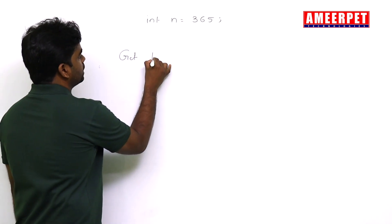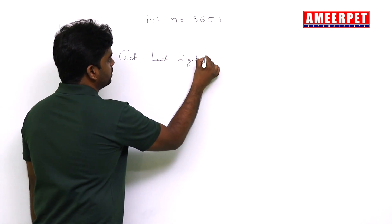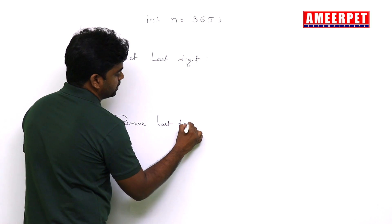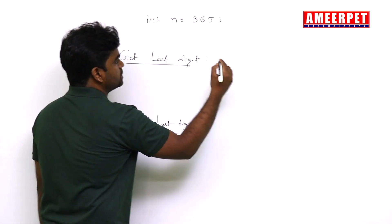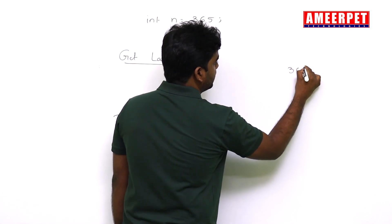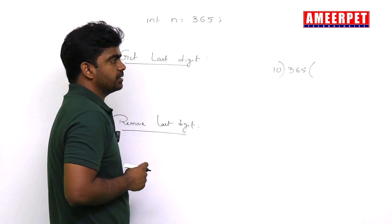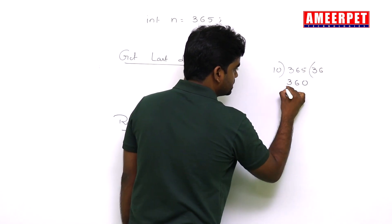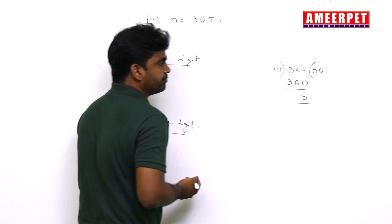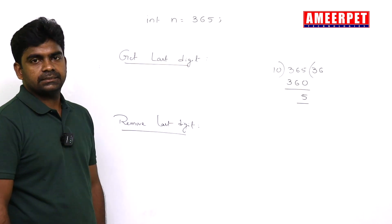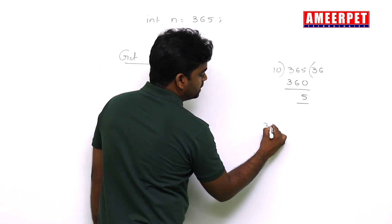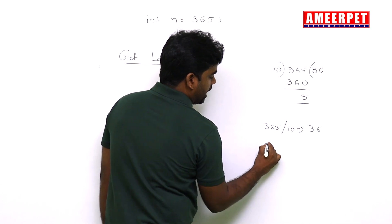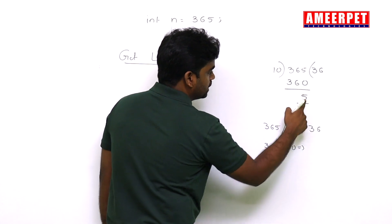The two things are very very important: get last digit from the given number and remove last digit from the given number. See, any number, suppose 365, whenever you are dividing with the 10, any number you divide with the 10, 36 times integer part only I am taking, 360, and here the remainder is 5 because I am taking the type is integer. So if you divide 365 by 10, you will get 36.